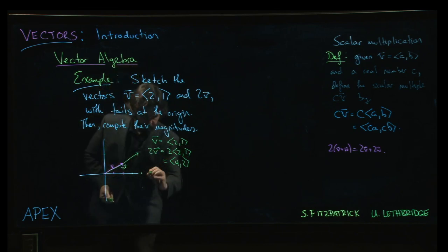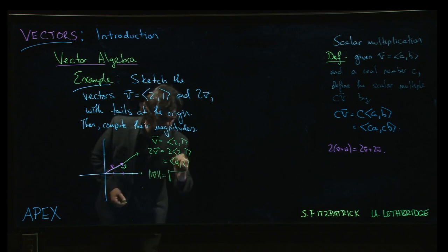Well, the magnitude of v is going to be the square root of 2 squared plus 1 squared, so 4 plus 1. That's the square root of 5.